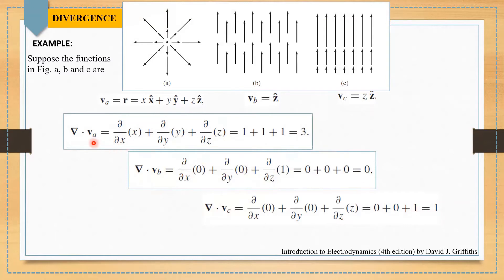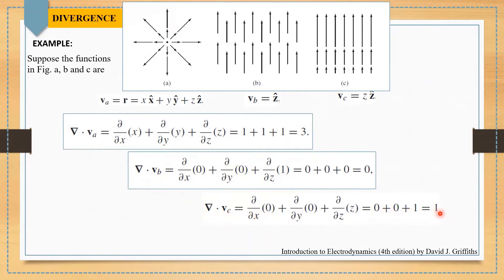As far as figure a is concerned, we have a positive divergence — taking the divergence of that function gives three, meaning we have a higher and positive divergence. In the second case, looking at the figure, there is no divergence, so taking the divergence of the second function gives zero. In the third case, as expected from the figure, there is a divergence, and the divergence of the third function gives one.